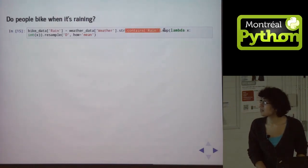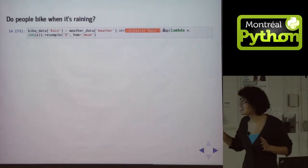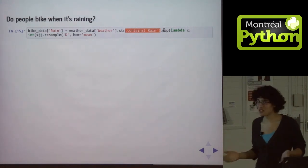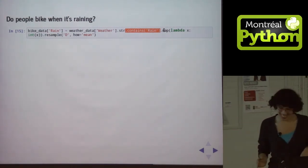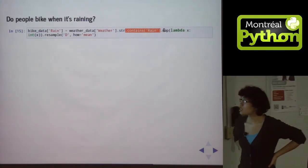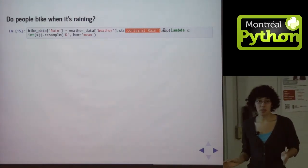and then convert that to a one or a zero, which I think technically we don't have to do, but I wanted to demonstrate the dot map method, because you can put anything in it, and it's really powerful. And then, again, resample that every day.